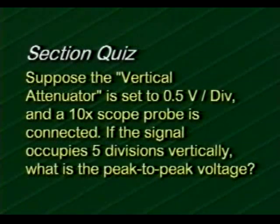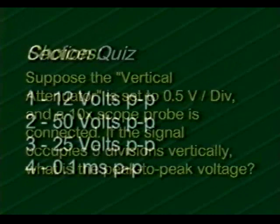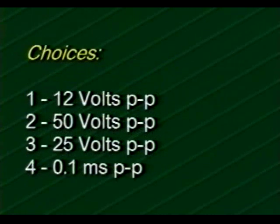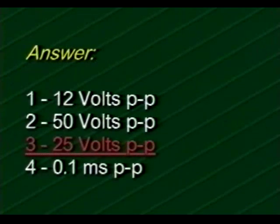Let's check and see how well you've mastered the material in the preceding section. Suppose the vertical attenuator is set to 0.5 volts per division and a 10X scope probe is connected. If the signal occupies five divisions vertically, what's the peak-to-peak voltage? The choices are 12 volts peak-to-peak, 50 volts peak-to-peak, 25 volts peak-to-peak, or 0.1 milliseconds peak-to-peak. The correct answer is choice number three, 25 volts peak-to-peak.